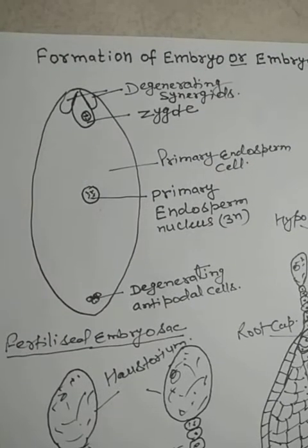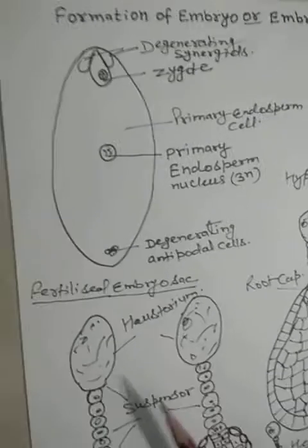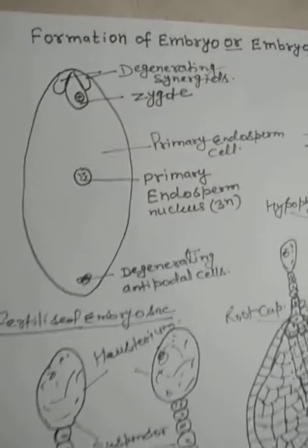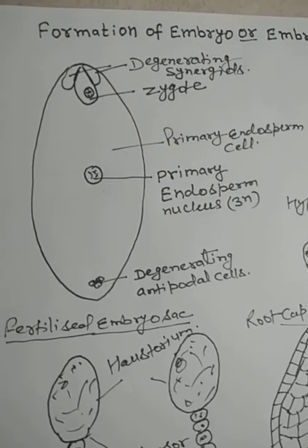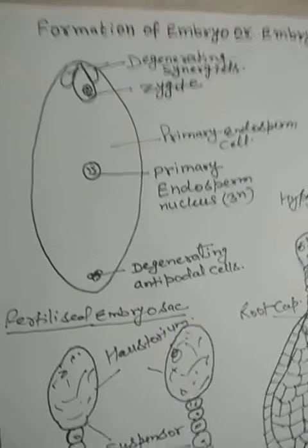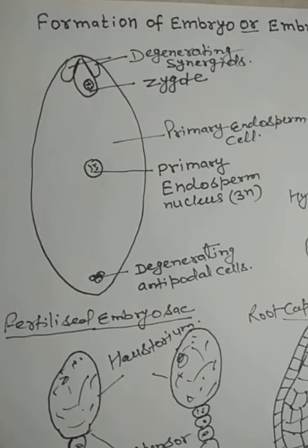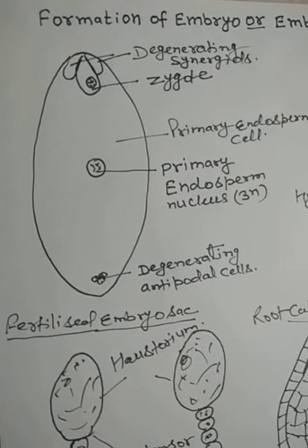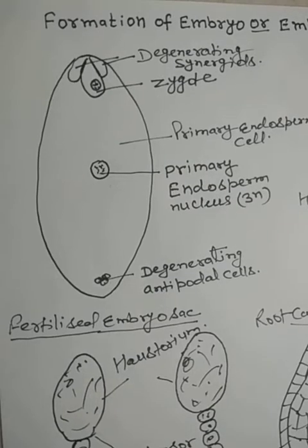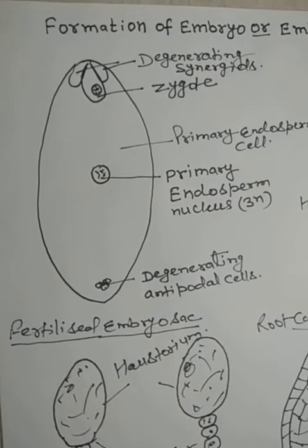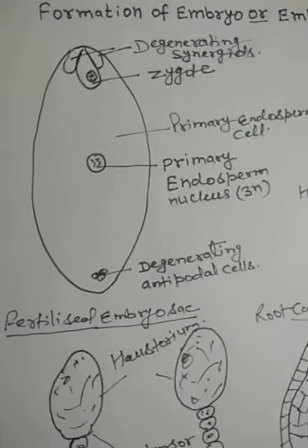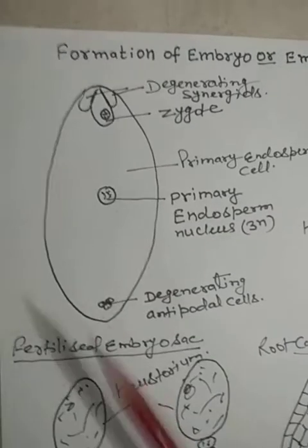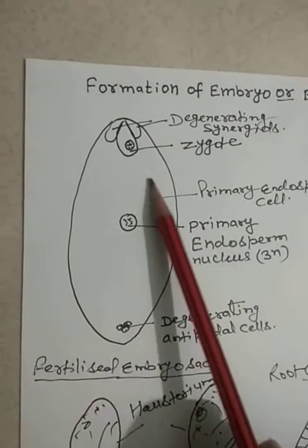This is the most common type of endosperm development: free nuclear endosperm forms first, in which the primary endosperm nucleus divides repeatedly to form thousands of nuclei, and then cell wall formation occurs from periphery towards the center, changing it into cellular endosperm. After endosperm development, embryo development occurs, in which the zygote cell divides to form the embryo.